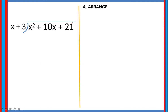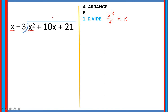Now let's apply the rule. The first step is divide — divide the first term of the dividend by the first term of the divisor. So, x squared divided by x is equal to x. Remember the quotient rule: you are going to subtract the exponents if they have the same base. Then write your quotient above the dividend at the same power position.